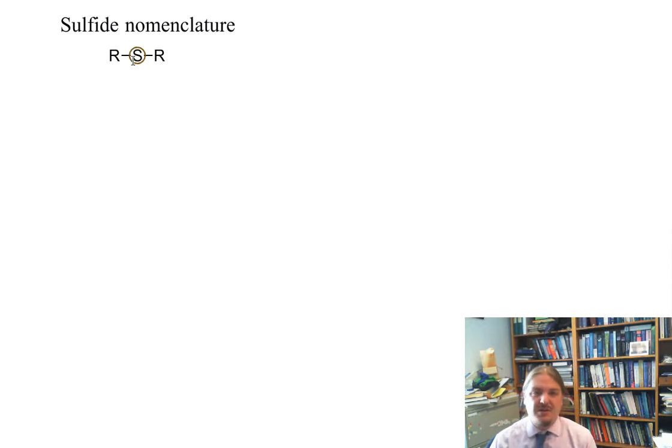I've got the generic form of a sulfide functional group up here. It's worth noting that sulfides can also be called thioethers. They are the sulfur analog of ethers. And so this word thioether says that this is like an ether except with a thio or a sulfur atom replacing the oxygen.